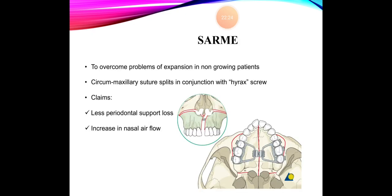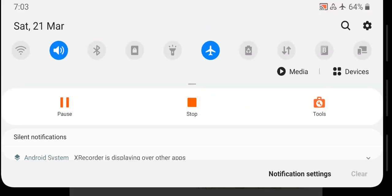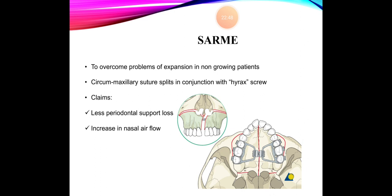If the suture has fused — the patient has surpassed the age of 16 to 18 — expansion devices alone are insufficient. In growing patients we go for appliance devices like the RX or others I'll discuss later. If growth is over, we go for surgical procedures to overcome transverse maxillary deficiency. SARME — surgically assisted rapid maxillary expansion — is suggested for non-growing patients.